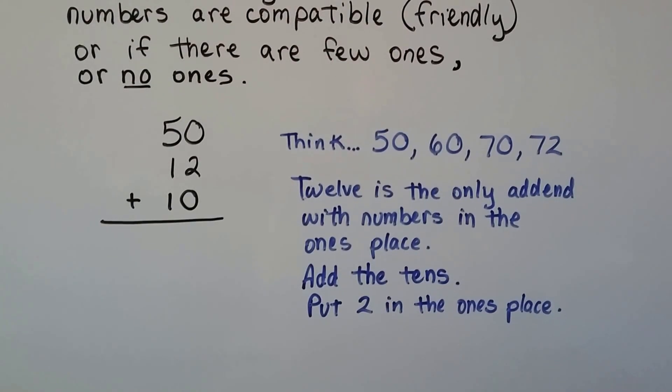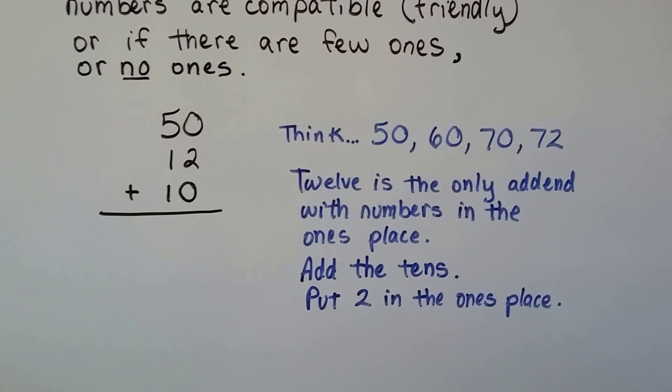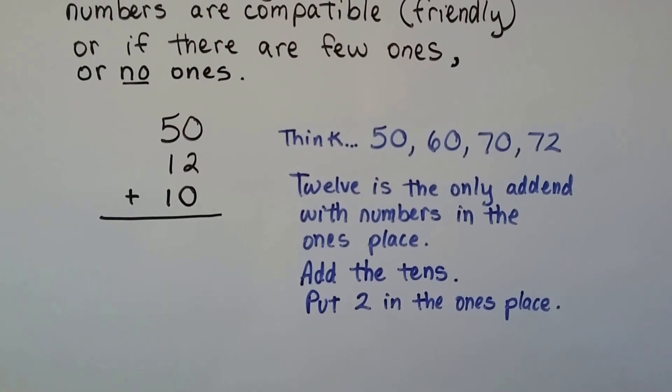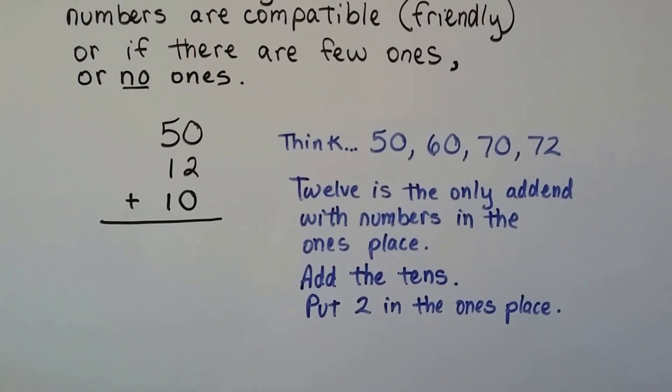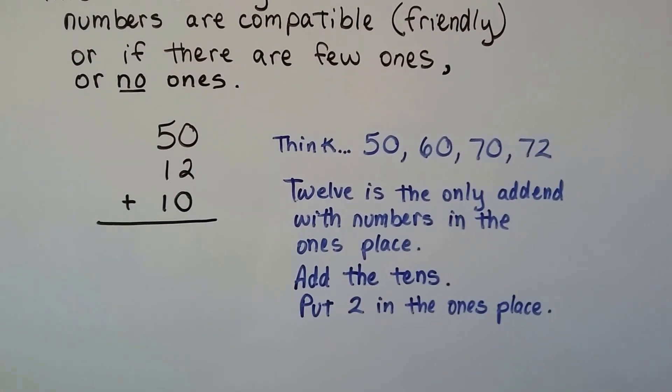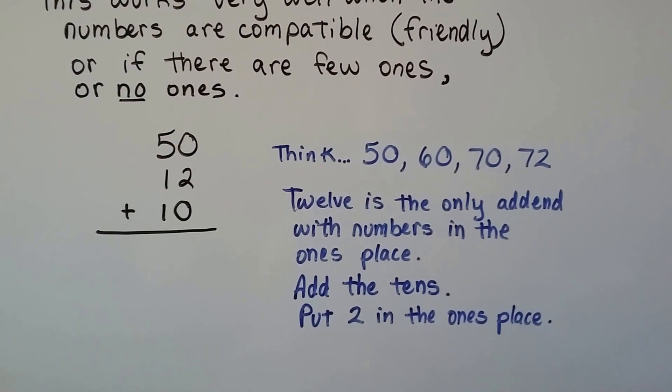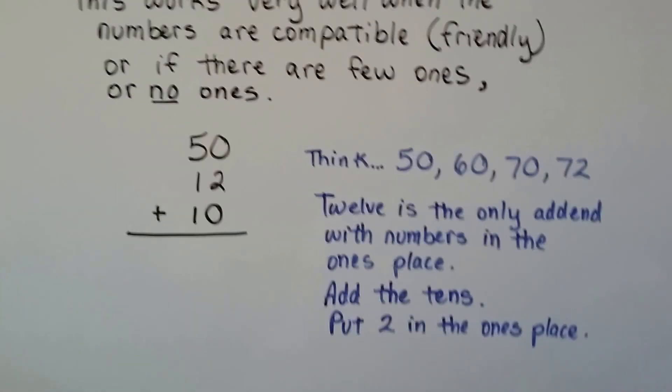It's actually easier to do mental math when you start with the larger numbers first. But it's easier to do it if there's no or just a couple ones, or maybe just one number that has numbers in the ones place. Okay?